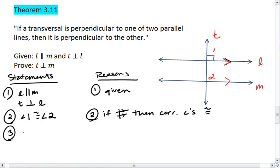I also know that angle 1 is a right angle. That's by the definition of a right angle, meaning the measure of angle 1 is 90 degrees.